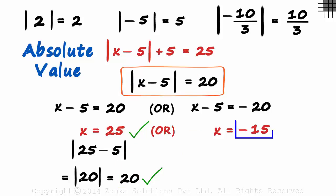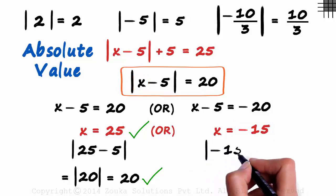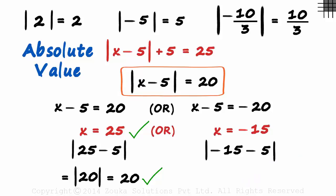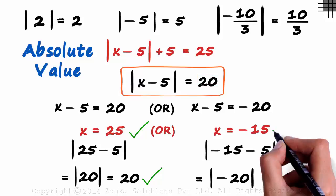Now let's try substituting minus 15 here. We get absolute value of minus 15 minus 5. That equals absolute value of minus 20 and ignoring the sign, we get the answer as 20. It is the right hand side. Minus 15 is also the correct answer.